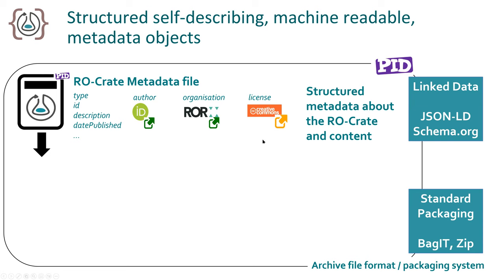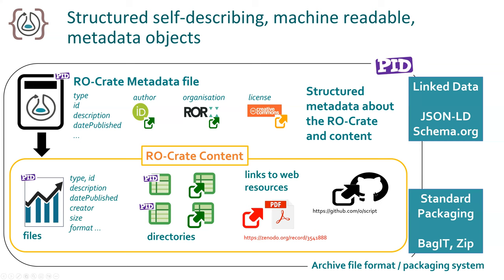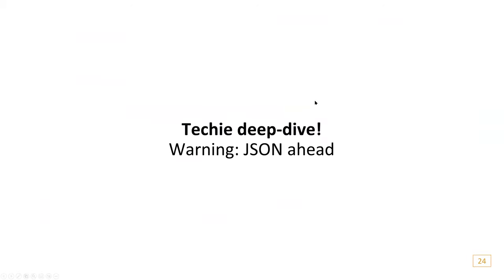The content includes data, maybe some software, which may or may not have existing identifiers. This can be packaged — if file-based, you can use things like BagIt and zip. We also put this straight on the web, so you can choose how you publish the RO-Crate. We use JSON-LD — a type of JSON where the keys have meaning. In regular JSON the keys are just defined by the developer, but in JSON-LD they can be mapped to a meaning using URLs.